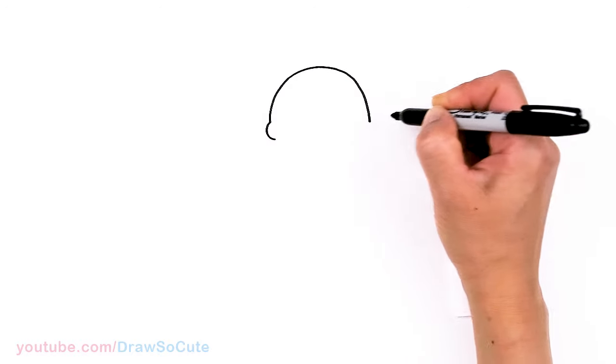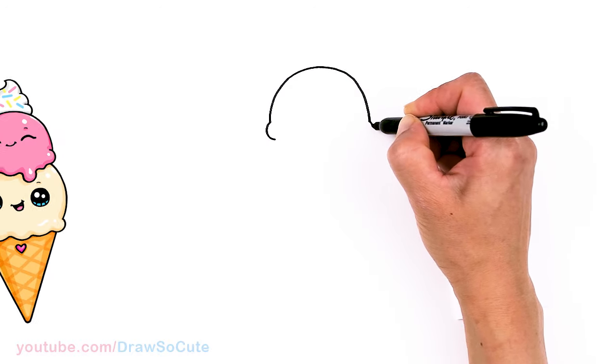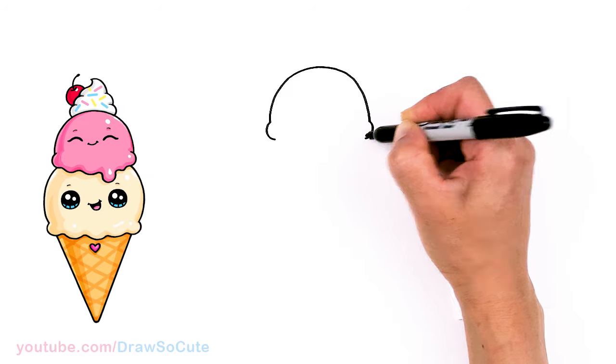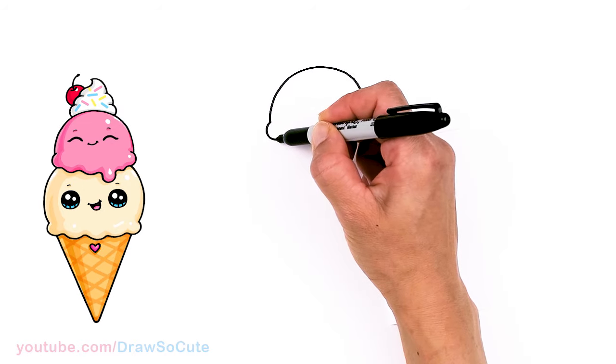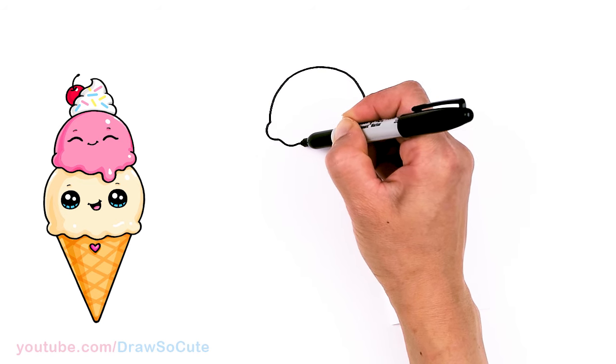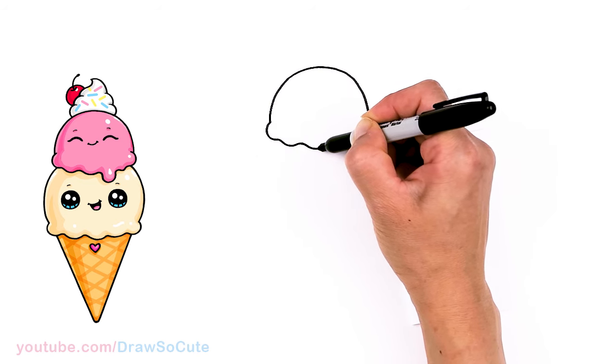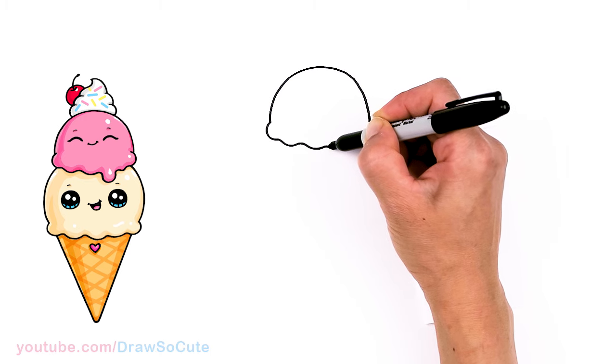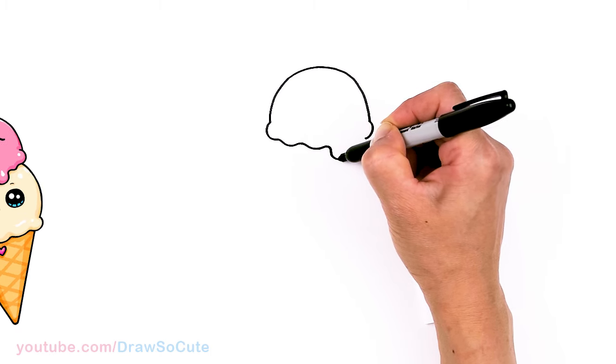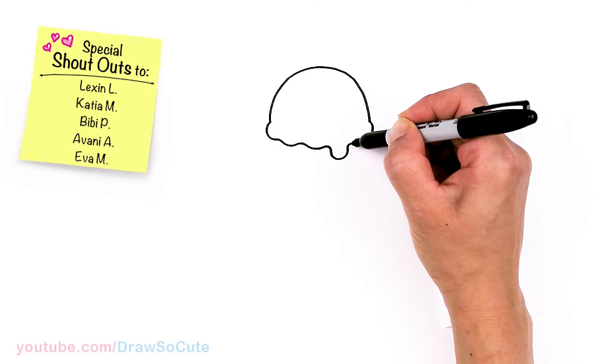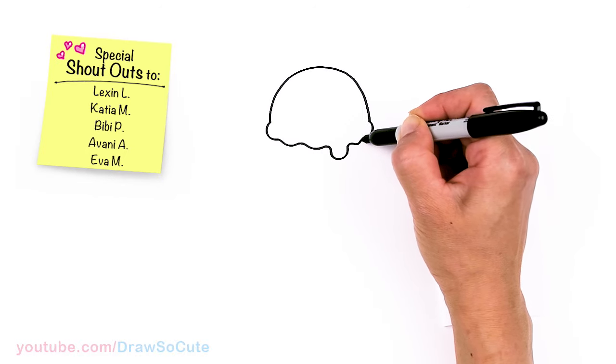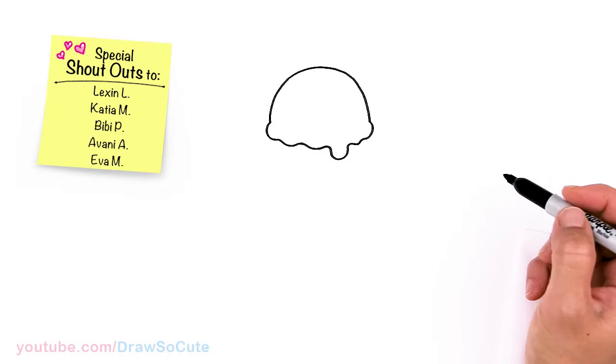I'm gonna pop this out a little bit, come around and same thing here. Just pop it out a little bit and around. Then from there we're just gonna wobble across. Just wobble and maybe about right here we can just go ahead and bring it down a little bit more and then wobble back up. There to connect back.